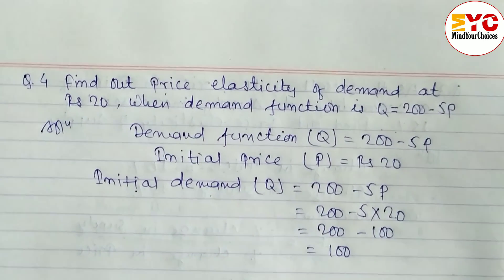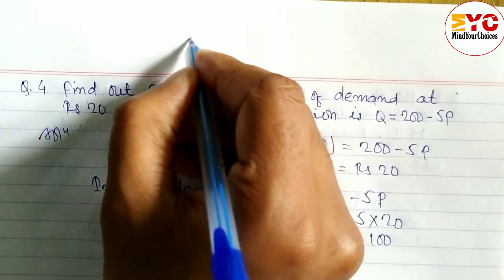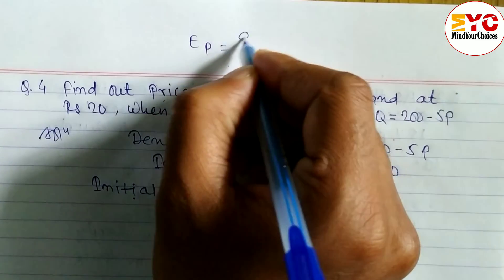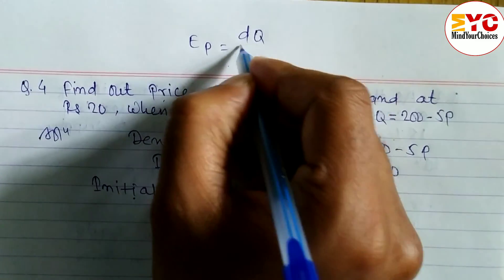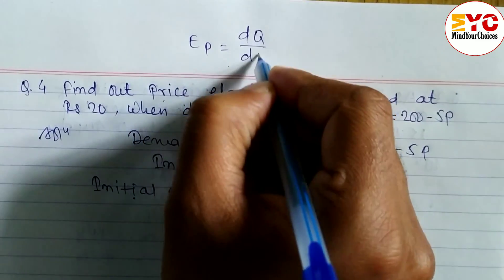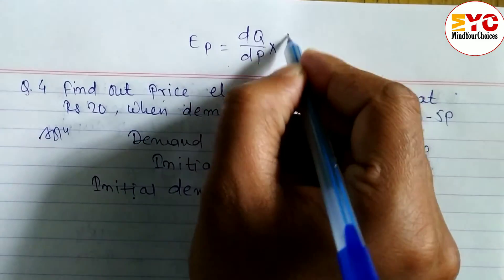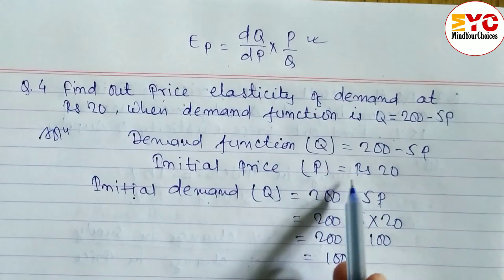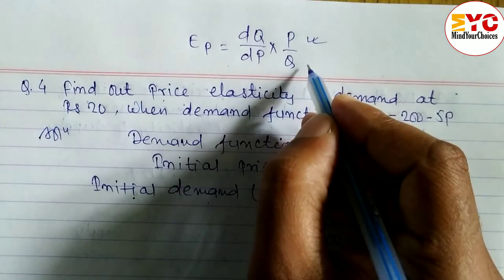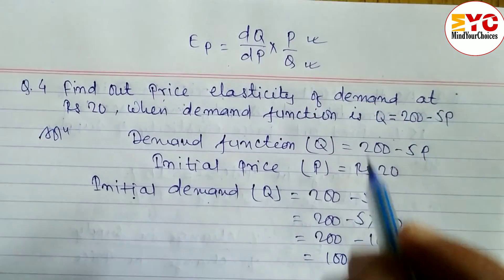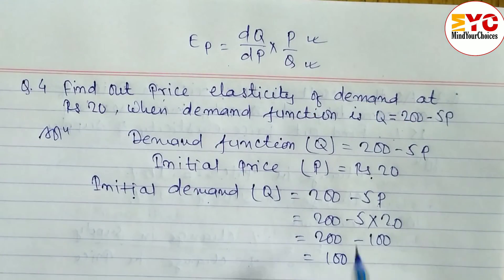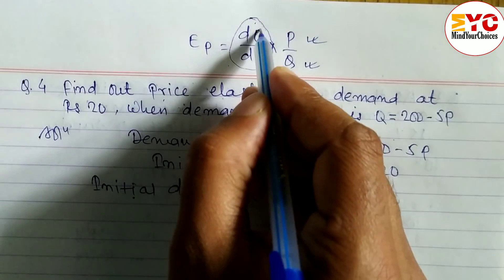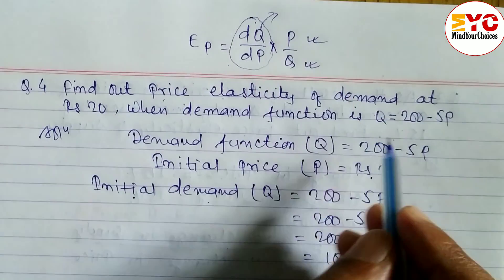We have to find the price elasticity of demand. The formula is: ep equals dq/dp multiplied by p/q. We have the value of p which is 20 and the value of q which is 100. Now we need to find dq/dp from the given demand function.